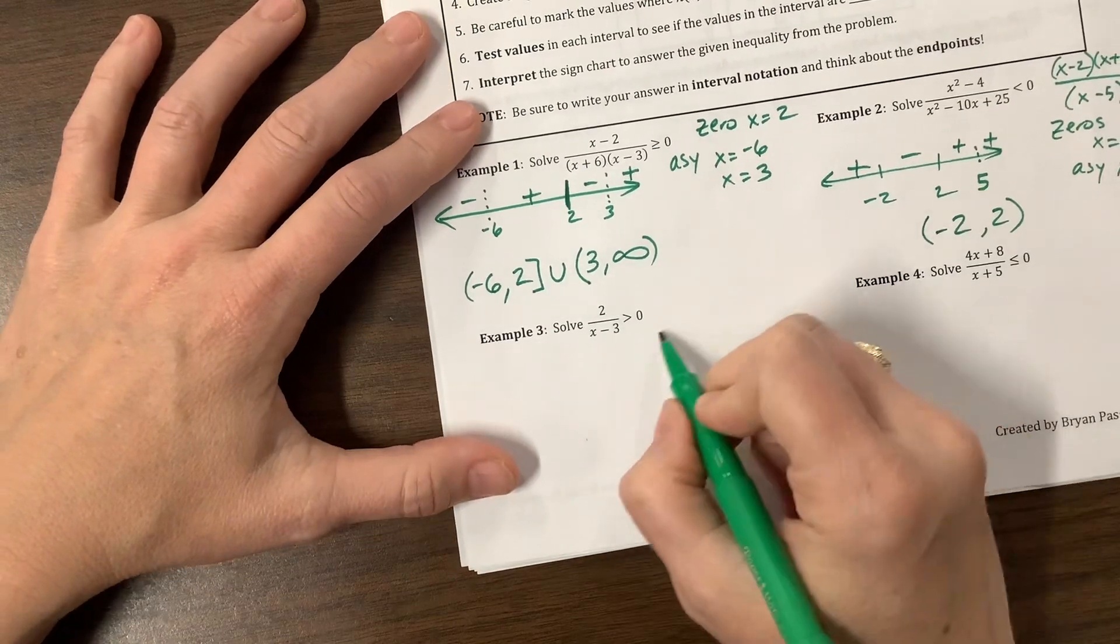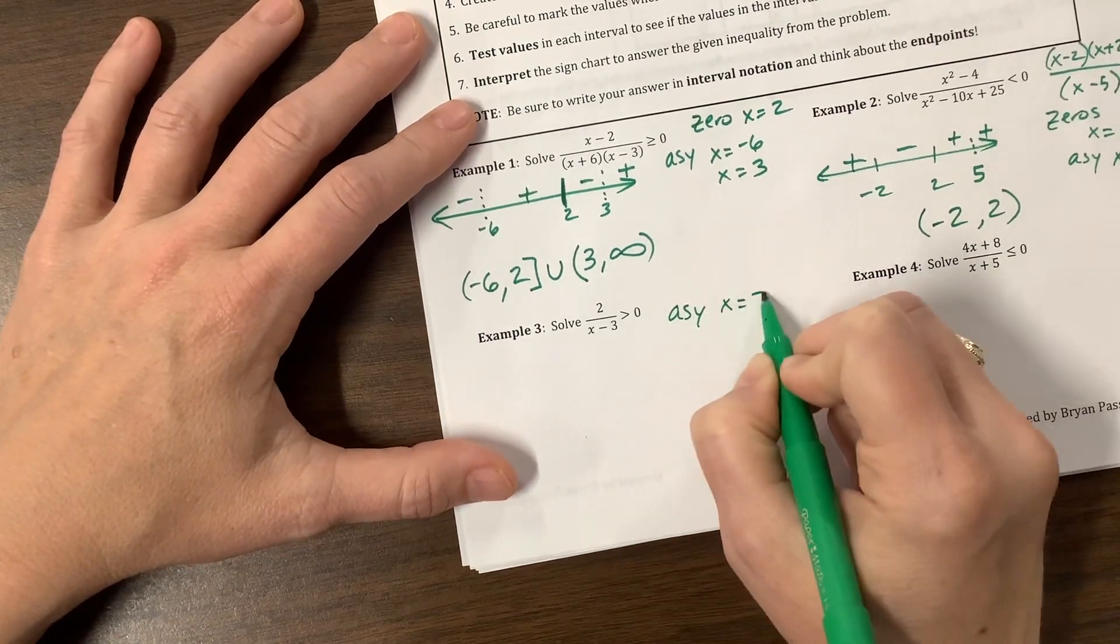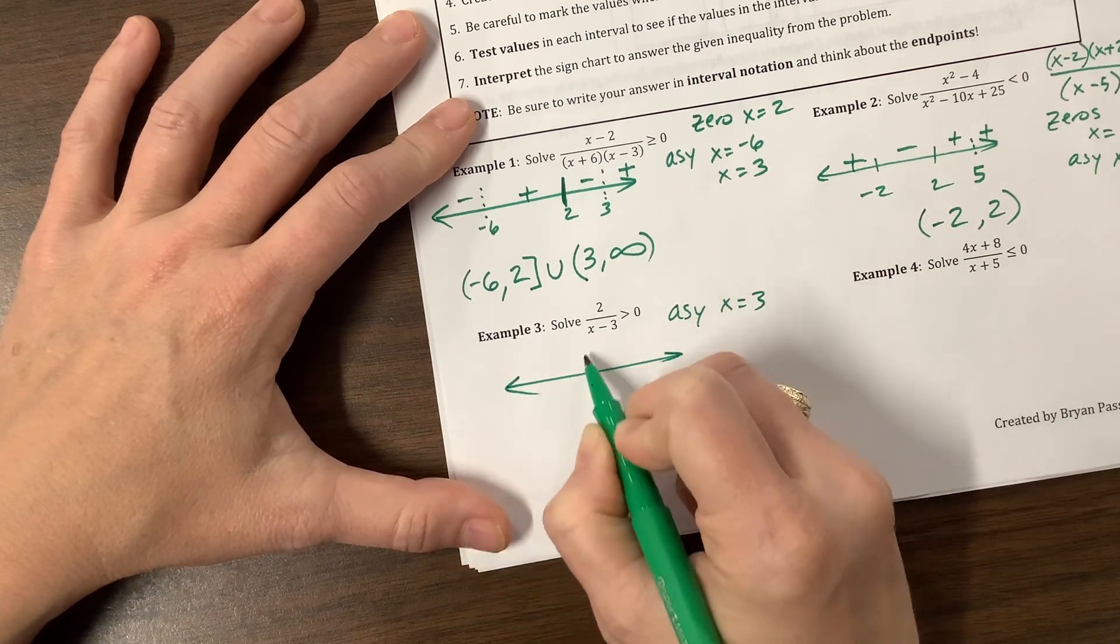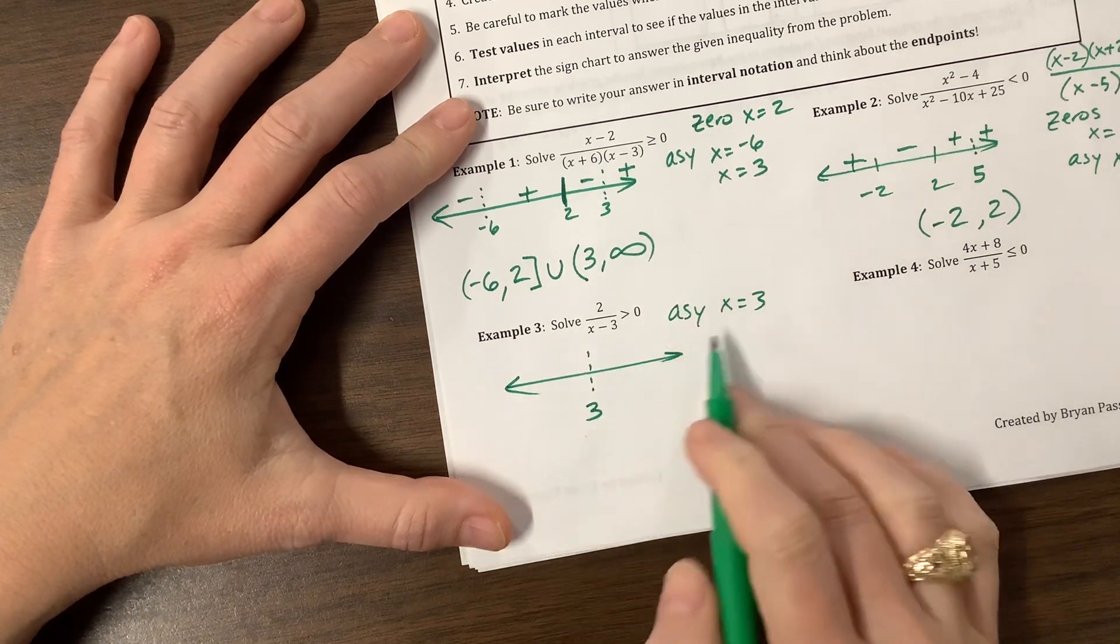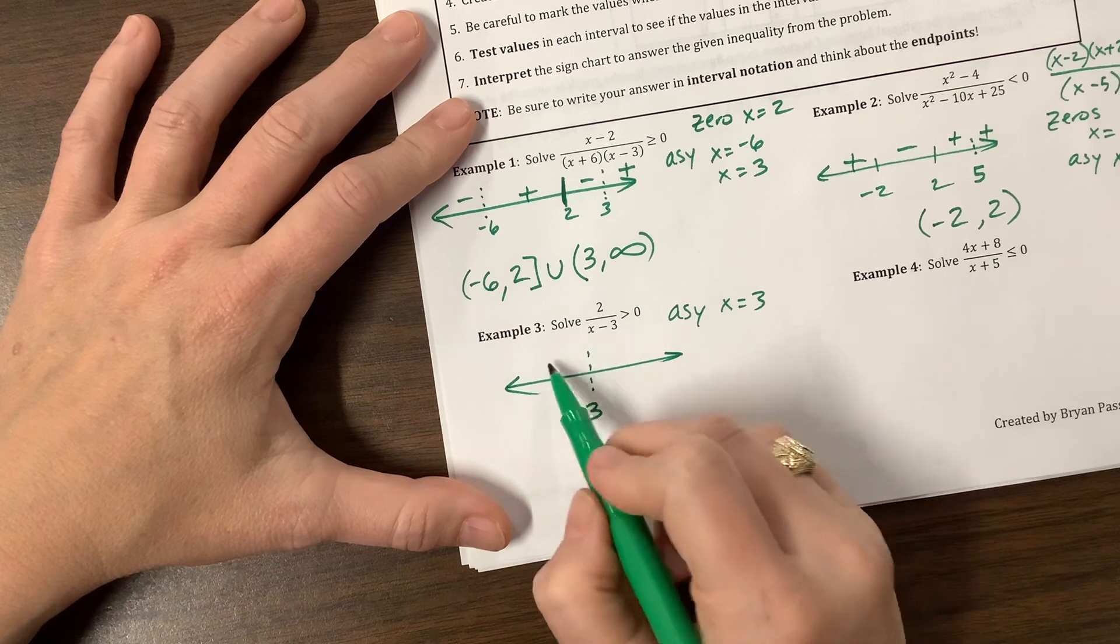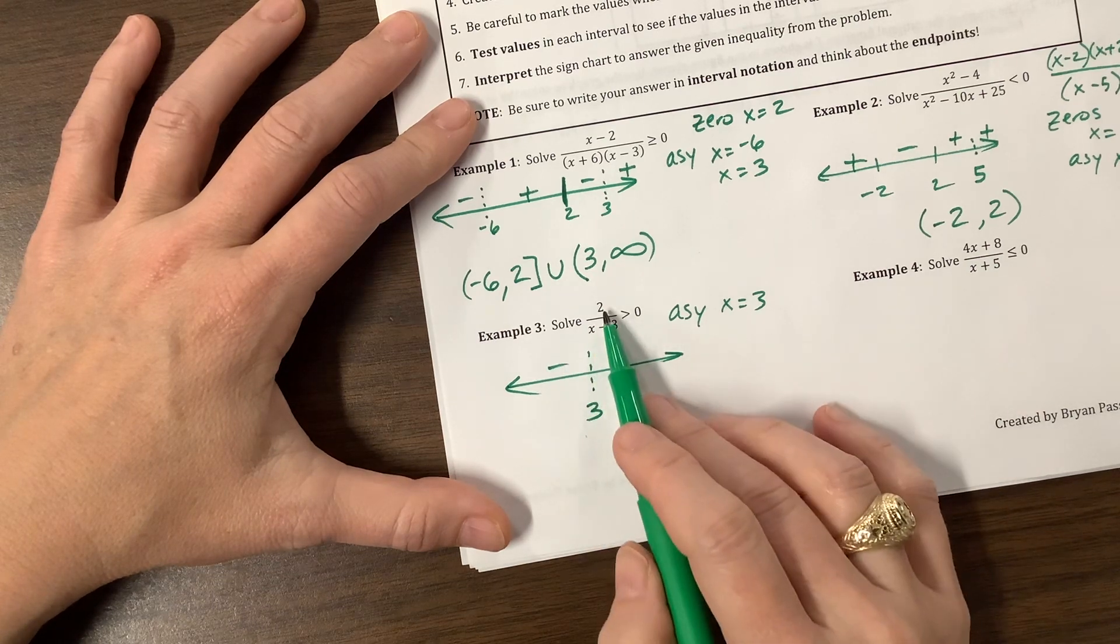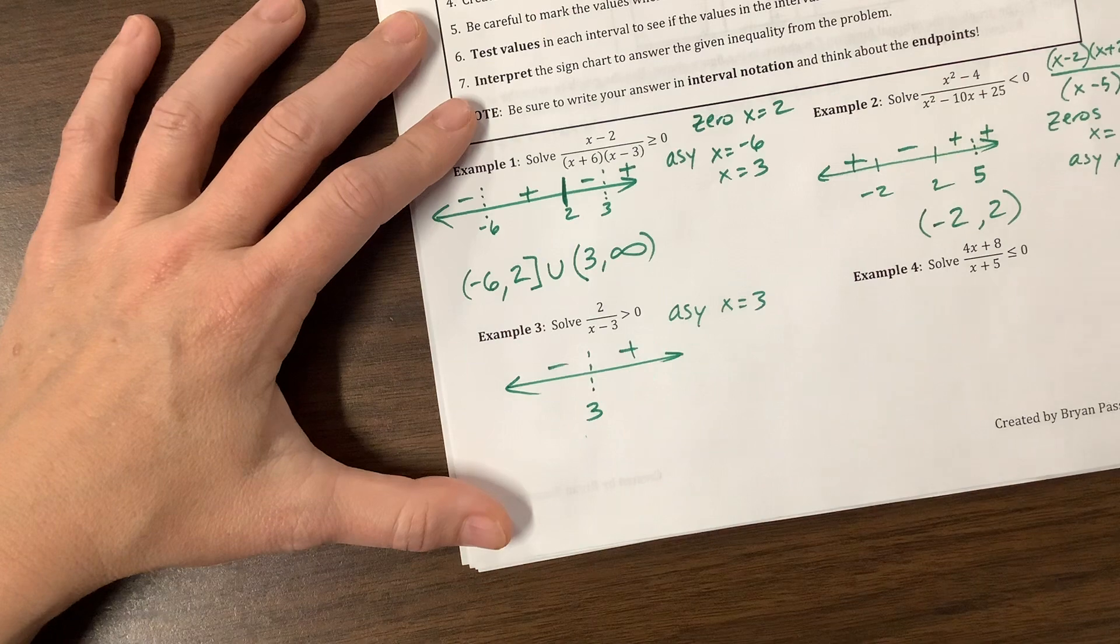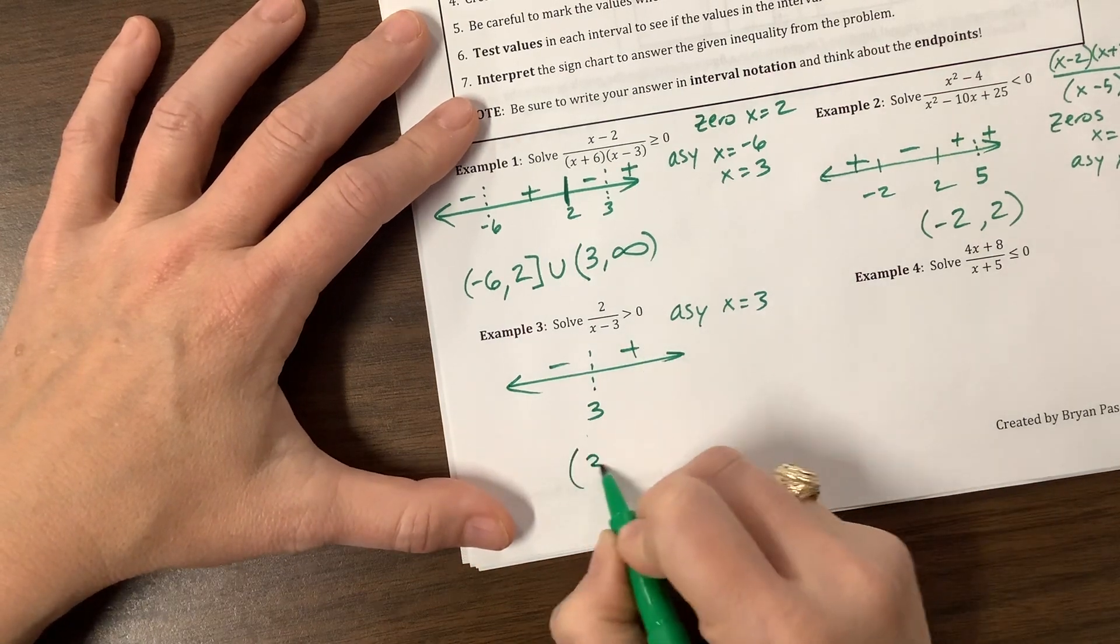Okay, here we go. We have an asymptote at x equals 3. So at 3, so if I plug in 0, I'm going to get a negative. If I plug in 4, I have a positive, so positive by positive is still positive. So where am I greater than 0? From 3 to infinity.